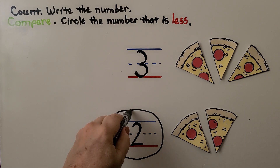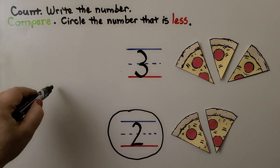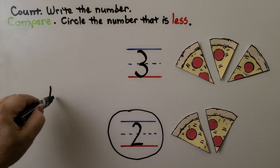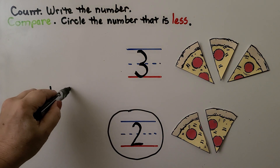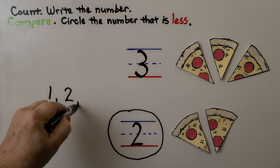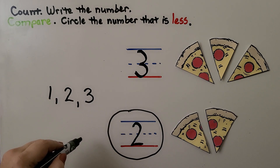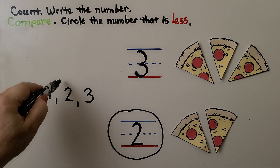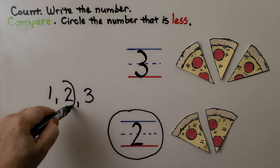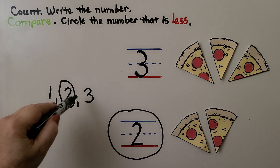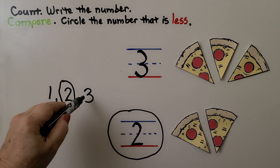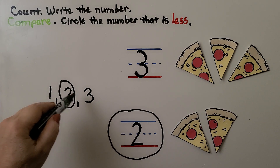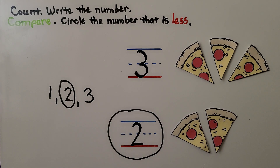If we're not sure, we can write one, two, three in counting order. We see that two comes before the three — it's the lesser number.